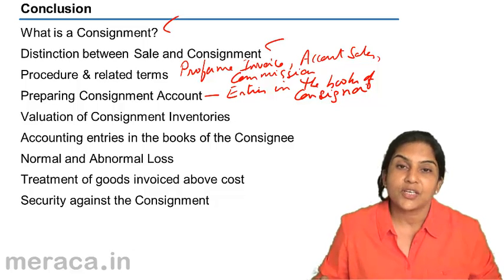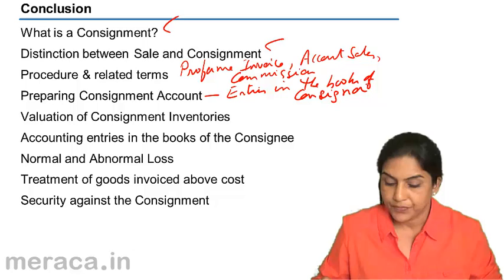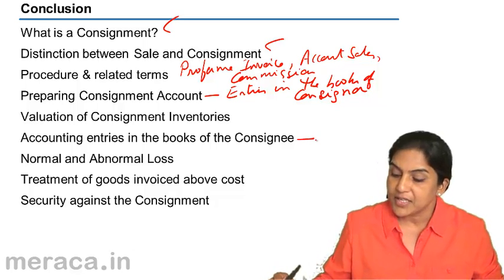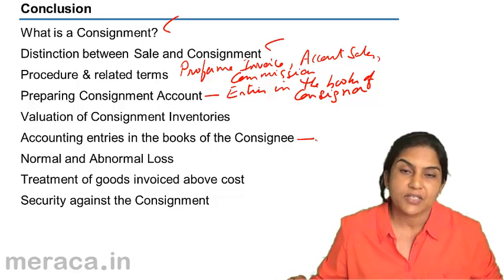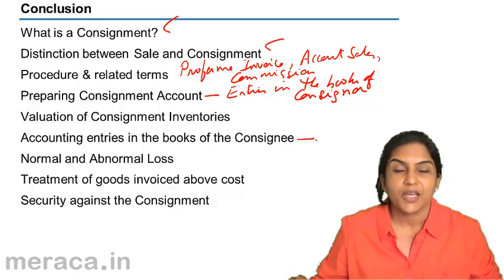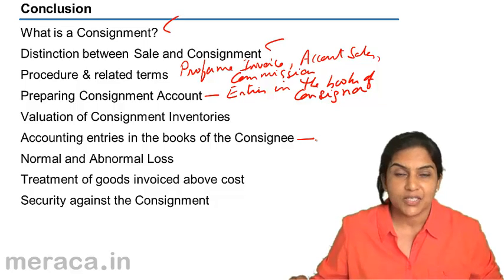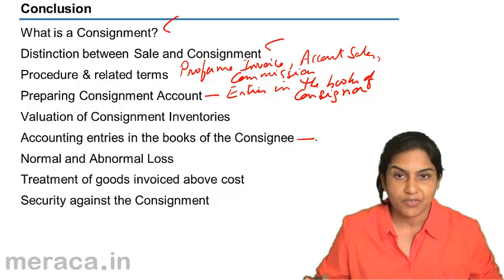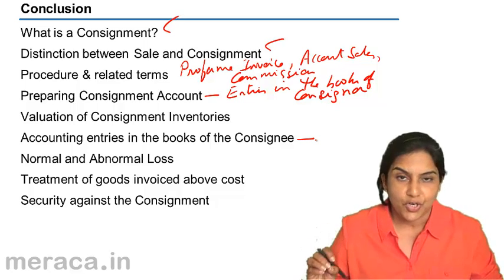Closing stock is credited to the consignment account. Then we discussed the accounting entries in the books of the consignee. In the books of the consignee, no entry is passed when goods are received, because ownership is not transferred.